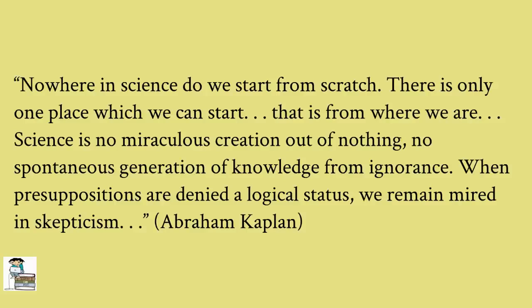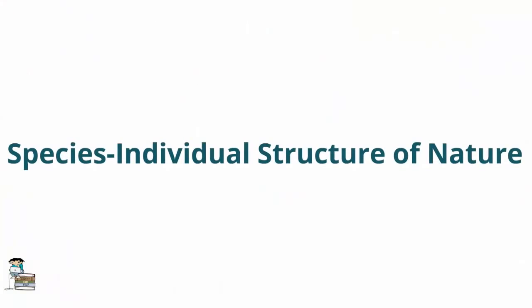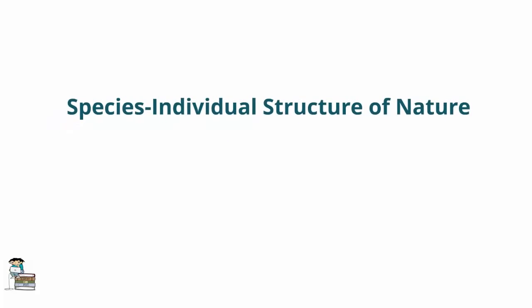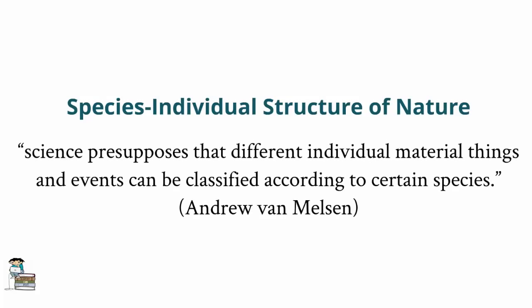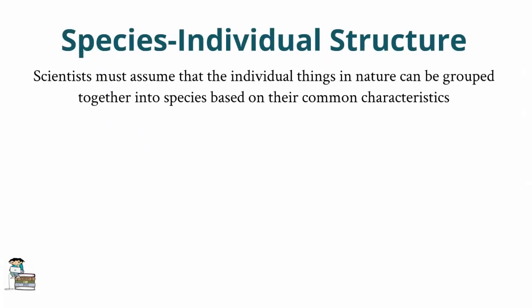Examining in more detail one of these presuppositions will provide us with a good example of a proposition about the natural world, which scientists accept as true, but which is not discoverable by the operation of science. The presupposition we will discuss is a variant of the belief in the regularity of nature called the species-individual structure of nature. Andrew Van Melsen nicely explains the meaning of this presupposition in his book The Philosophy of Nature, where he writes: Science presupposes that different individual material things and events can be classified according to certain species. What he means is that for science to operate, it must assume that the individual things in the natural world can be grouped together into what he calls species based on their common characteristics.